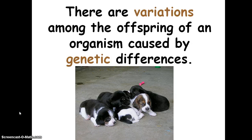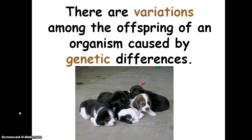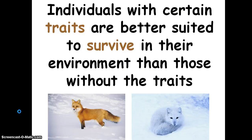There are variations among the offspring of an organism caused by genetic differences. In this picture we can see puppies that are fully black, puppies that are black and white, and a puppy that's brown and white. Natural variations or differences need to exist in an organism — these differences are caused by genes, which are sections of DNA found in the nucleus.